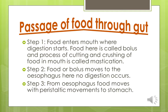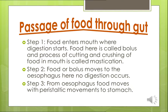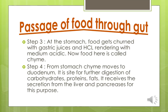Step 2: Food moves to the esophagus. Step 3: From the esophagus, food moves to the stomach through peristaltic movements. At the stomach, food gets churned with gastric juice and HCl. Food in the stomach is called chyme.